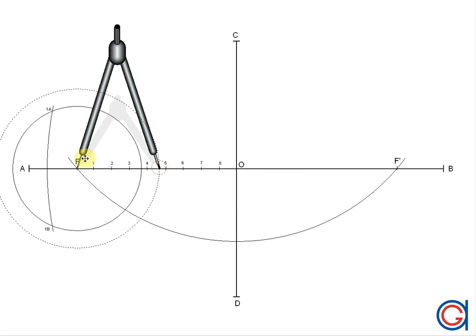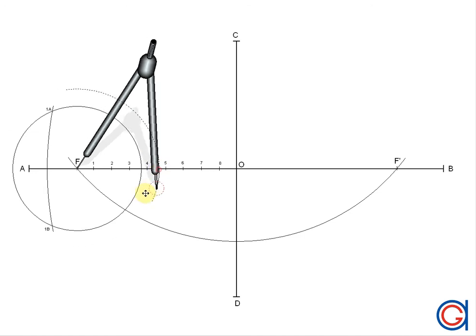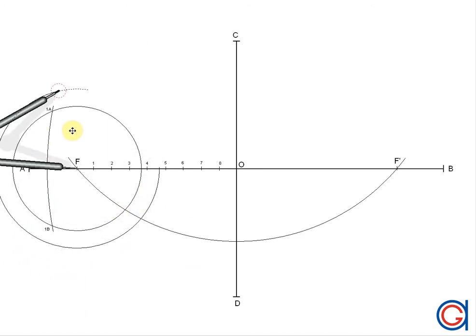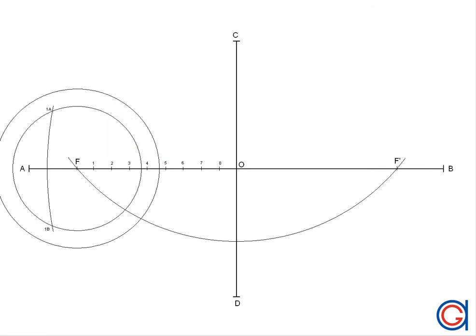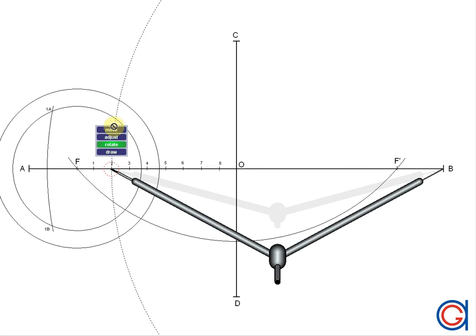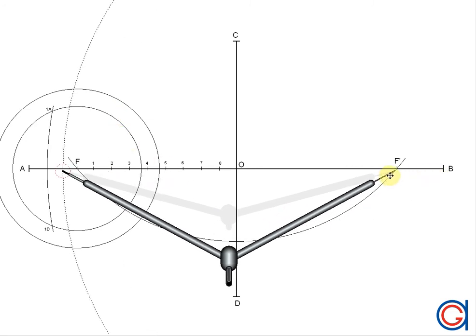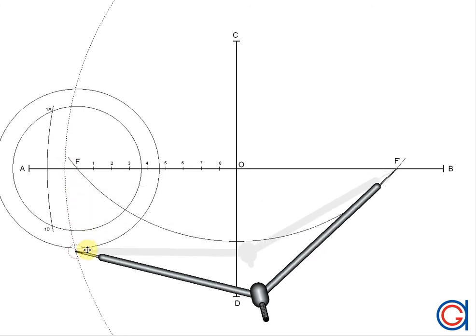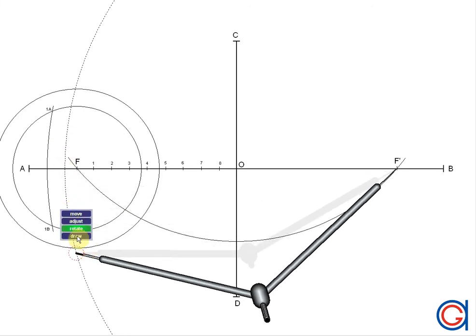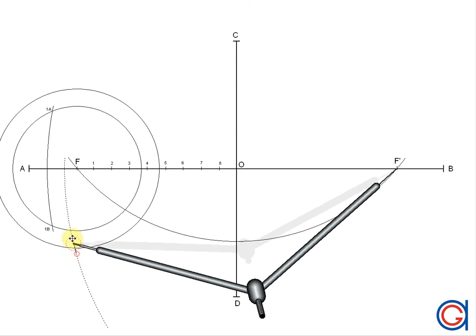The next step: we are going to set the compass to the length A2, and with this radius, we set our compass on the focal point F and draw another circle. Now, setting our compass to the length B2, with this length, we set our compass on F' and scribe two arcs on the previously drawn circle, which we will call 2A and 2B, as can be seen here.